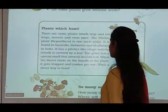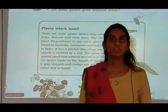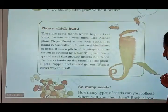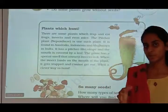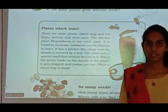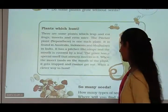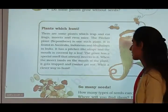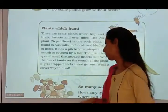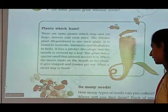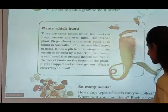Plants which hunt: there are some plants which trap and eat frogs, insects, and even mice. The Nepenthes plant is one such plant. When a honeybee goes to the flower, that plant closes its mouth and the insect is trapped. It is found in Australia, Indonesia, and Meghalaya in India. It has a pitcher-like shape and the mouth is covered by a leaf. When any insect sits on the mouth of the plant, it closes and the insect gets trapped and cannot get out. What a clever way to hunt!